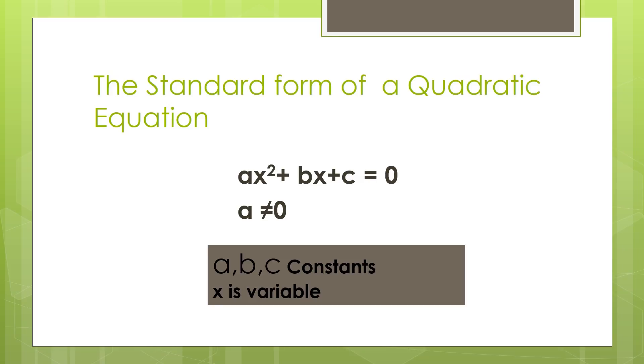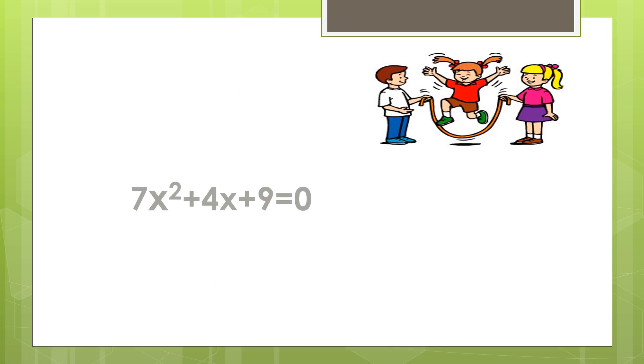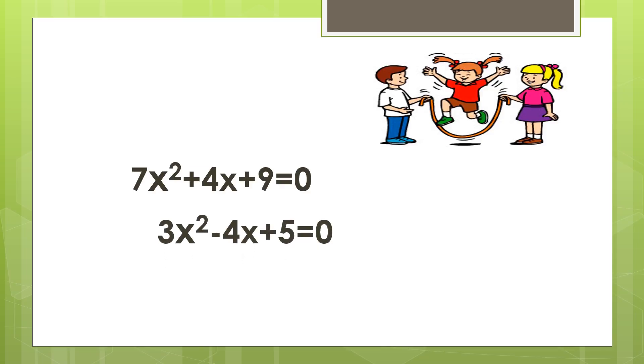Here are some examples of quadratic equations: 7x² plus 4x plus 9 equals zero, and 3x² minus 4x plus 5 equals zero.